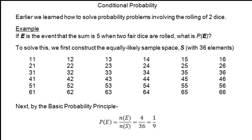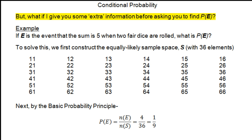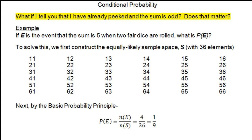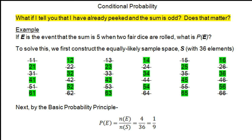This is something we've been doing for quite some time. Now I want to add a twist. Suppose I give you some extra information before asking you to calculate that probability — information you didn't have earlier. What if I tell you that I've already peeked and I know that the sum is odd? Does that have any effect on what you now think the probability is of the sum being 5?